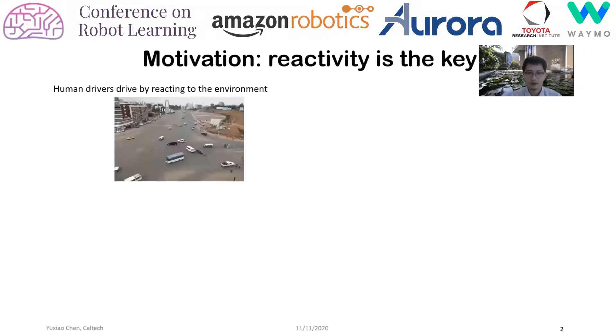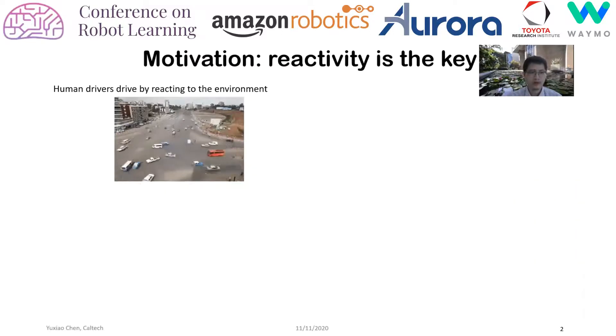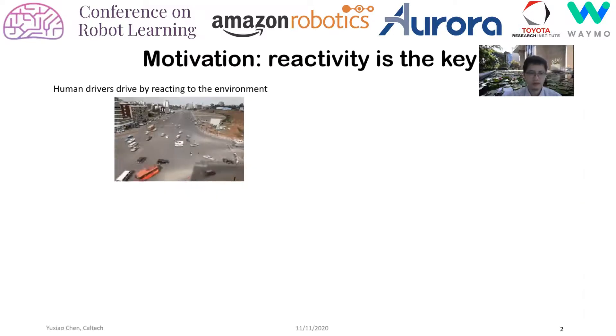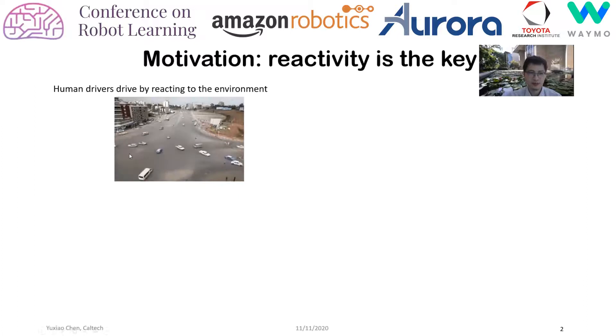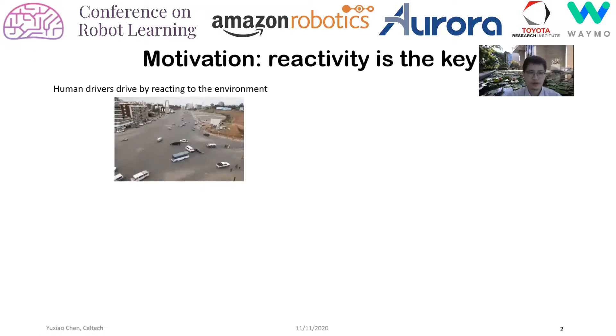It is our observation that humans are incredibly good at reacting to the environment when we drive. This is an intersection in Africa where there are no traffic lights, but people still manage to avoid most collisions.